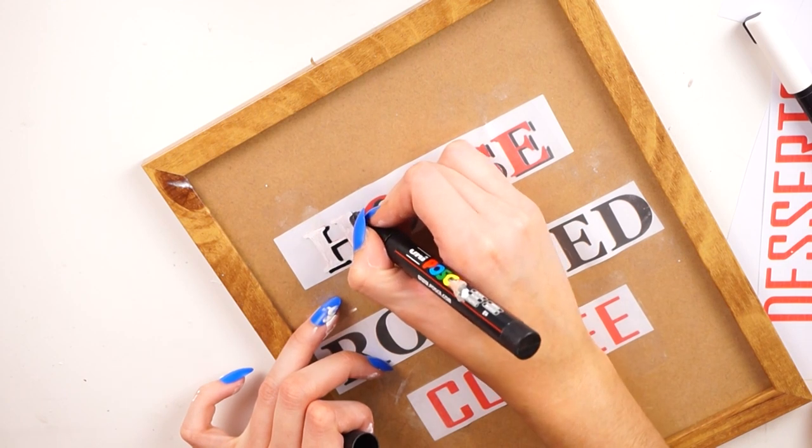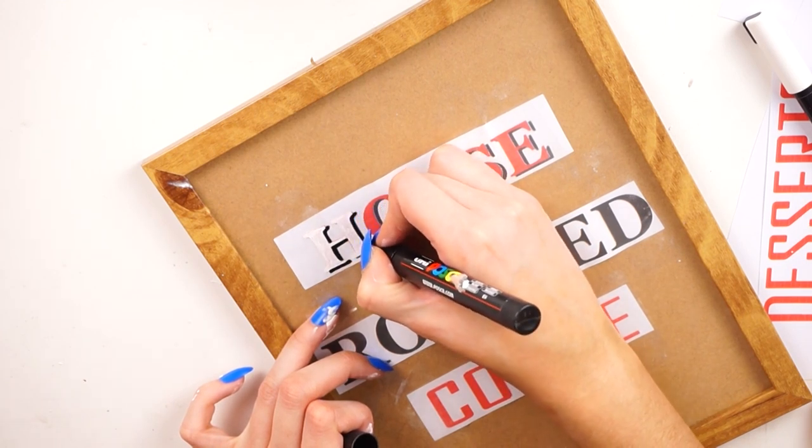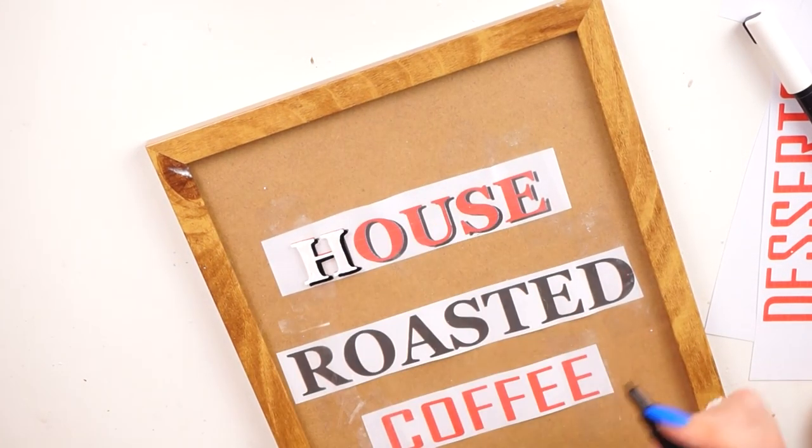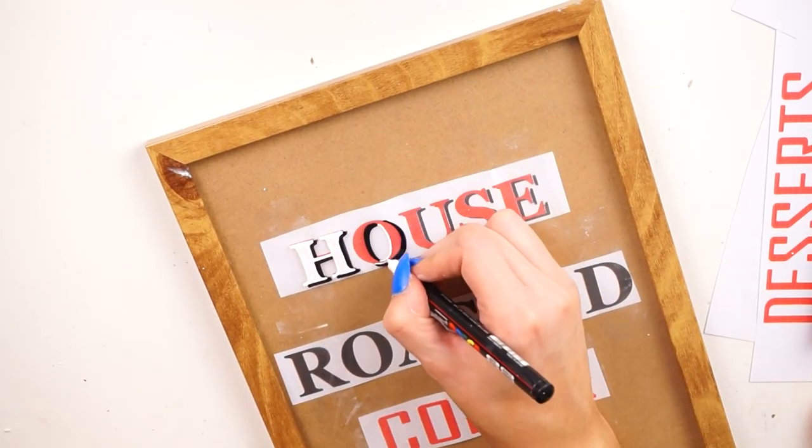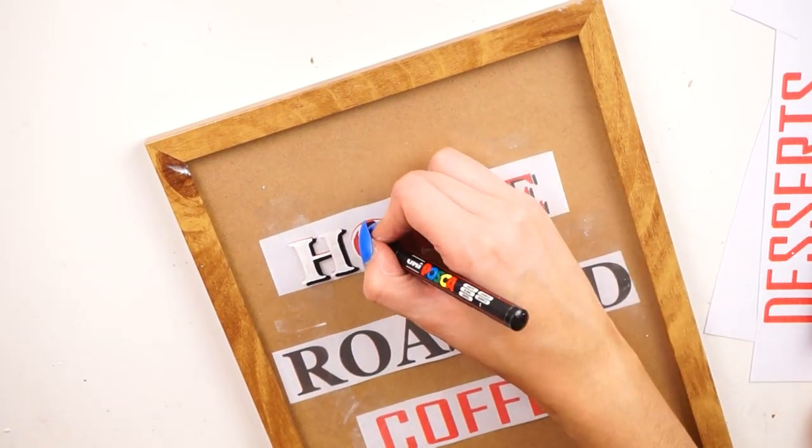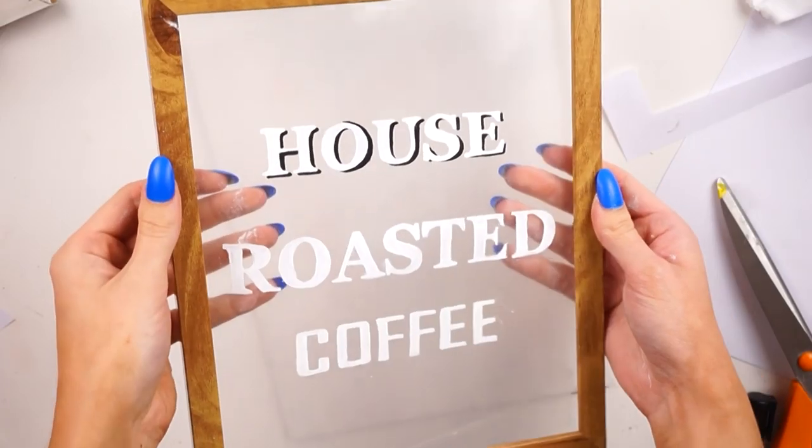Once I had that I then had the perfect kind of text to draw around and trace so I could get really nice freehand writing. So I went in with some Posca pens, a white one and a black one to start off with, and I just traced out all of the letters.